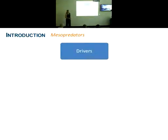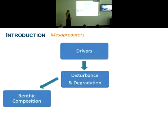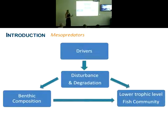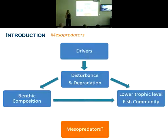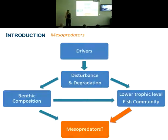In summary, we're well aware of all the drivers impacting on coral reefs currently, and there's been a great amount of focus on the resulting disturbance and degradation patterns. A number of studies have looked at how this disturbance will impact on the benthic composition of reefs and on the lower trophic level fish community. But as yet, there seems to be very little information on what this holds for mesopredators — how is habitat degradation affecting the mesopredator group? Being fairly large and mobile species, they're unlikely to be strongly directly impacted by benthic composition changes, but changes in the prey fish community are likely to be the channel through which they're most immediately impacted. This is the research gap I'd like to assess during my PhD.